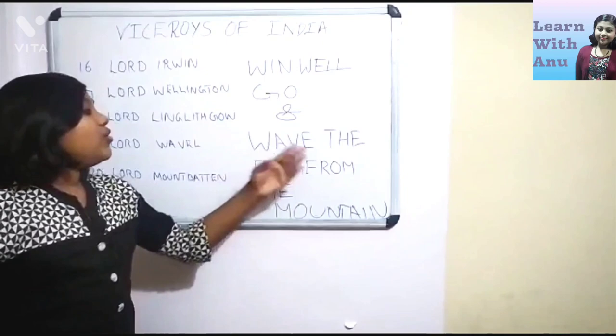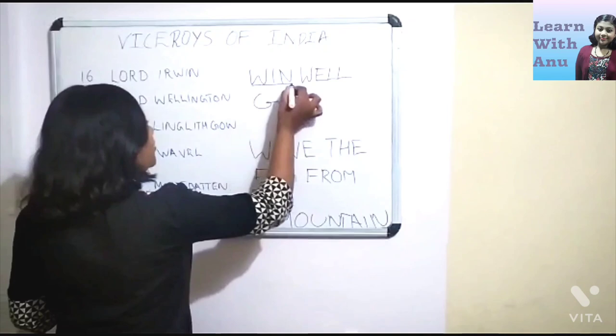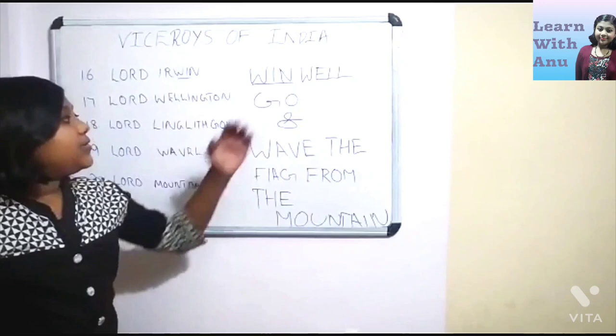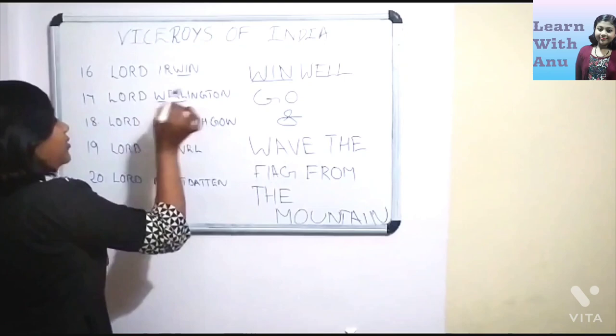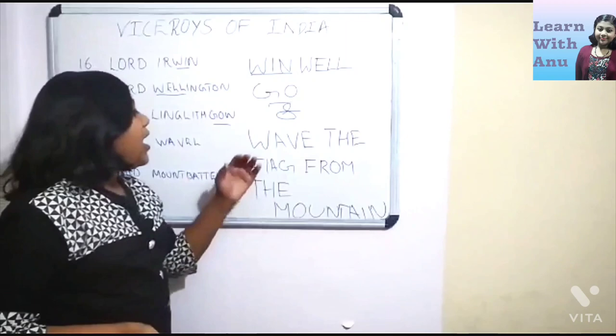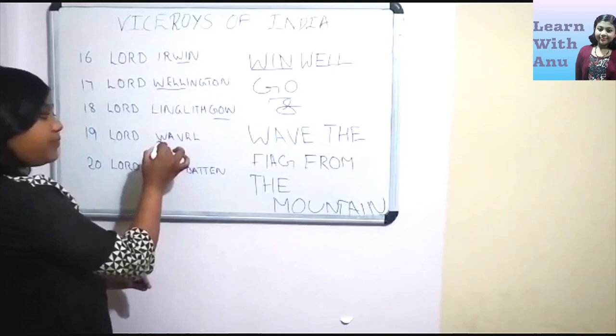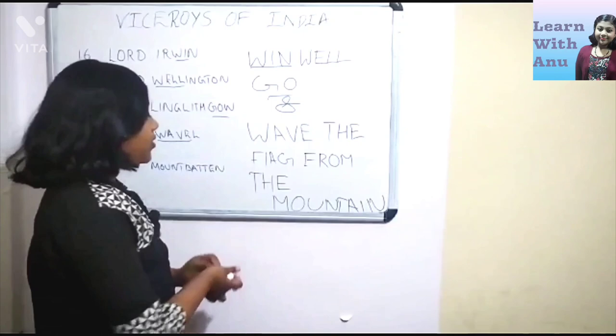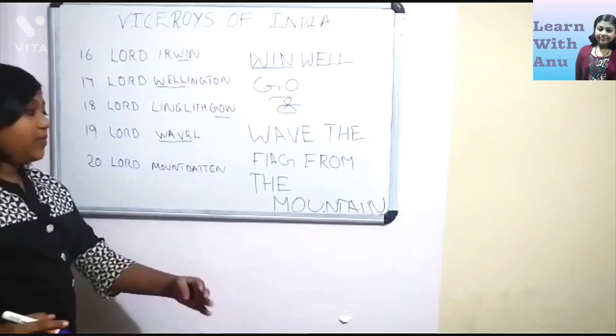Here we have the last clue. The word 'wind' represents Lord Irwin. Then we have the word 'well' to mention Lord Wellington. We have the word 'Go' to mention Lord Linlithgow. Next comes the word 'Wave' which represents Lord Wavell. And at last, we have the word 'Mountain' which represents our 20th Viceroy in British India, Lord Mountbatten.